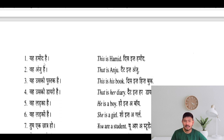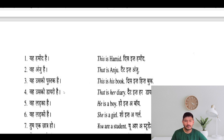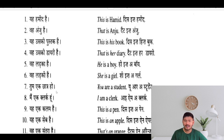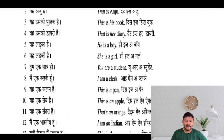This is Hamid. That is Anju. This is his book. This is her diary. He is a boy. She is a girl. You are a student. I am a clerk. This is a pen. This is an apple.